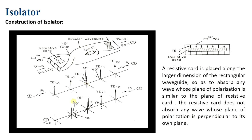The signal then passes through the mechanical twist, where it is again rotated clockwise by 45 degrees, making the electric field horizontal. When this horizontal electric field vector arrives at the resistive card near port 1, the field and the card are parallel to each other, so the electric field is totally absorbed and no signal appears at port 1. The total signal fed from port 2 is absorbed.